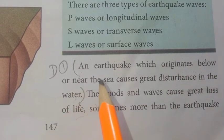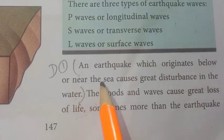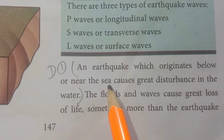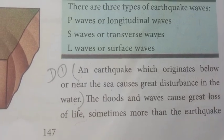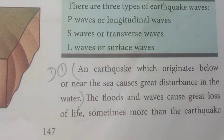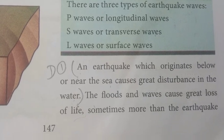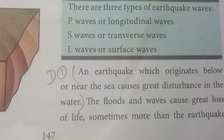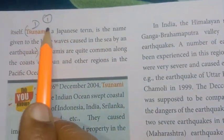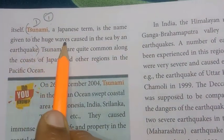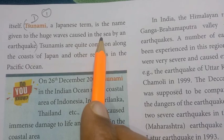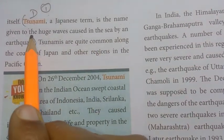An earthquake that originates below or near the sea causes great disturbance in the water. Tsunami is a Japanese term — it is the name given to the huge waves caused in the sea by an earthquake.